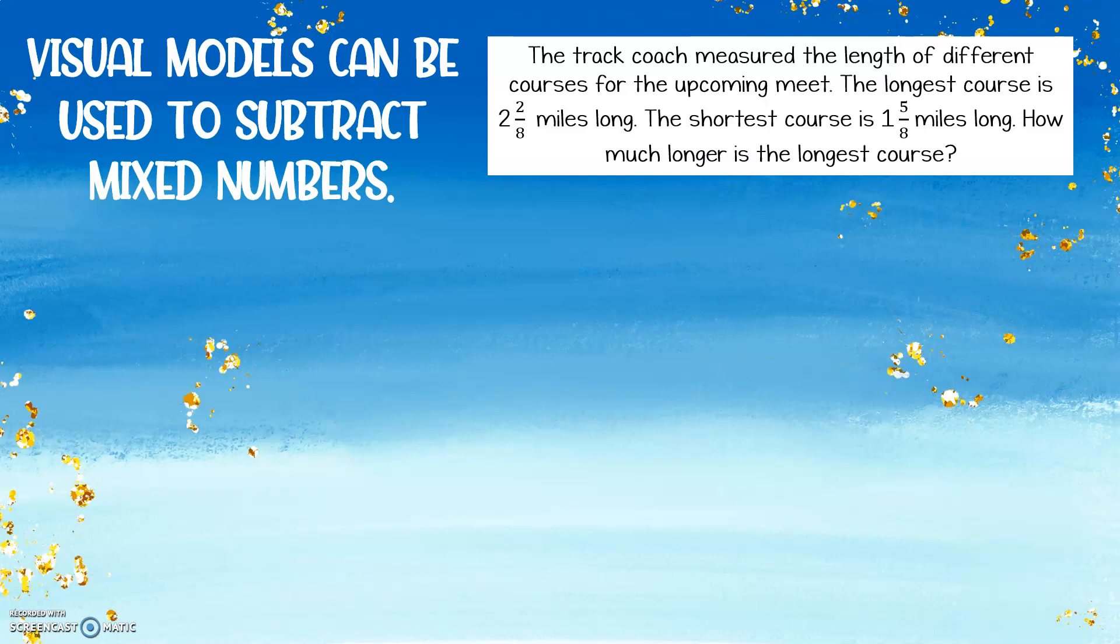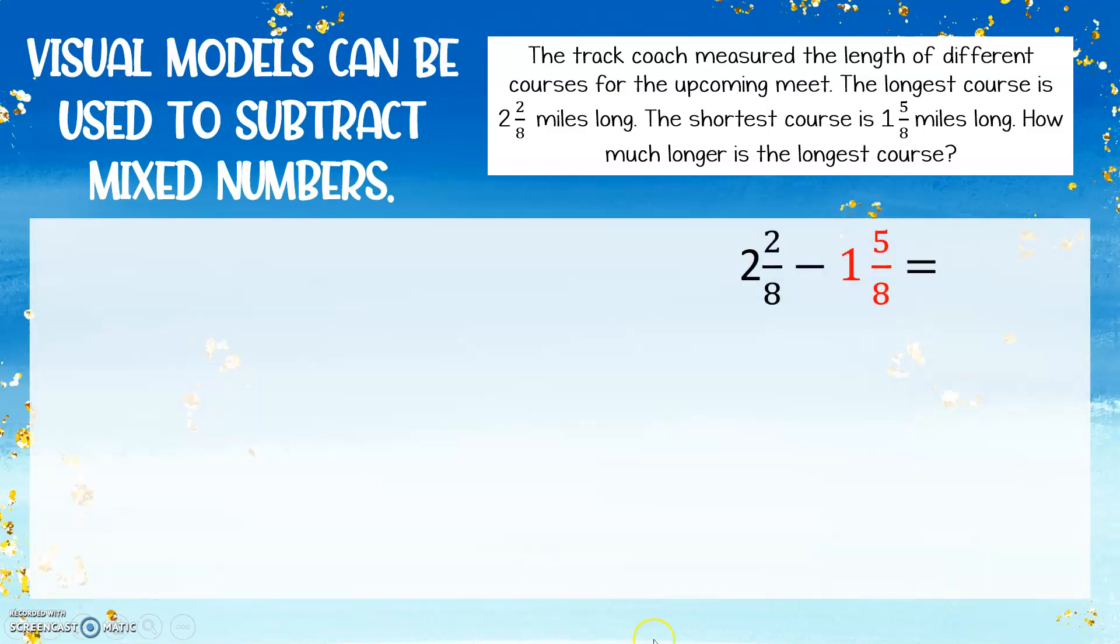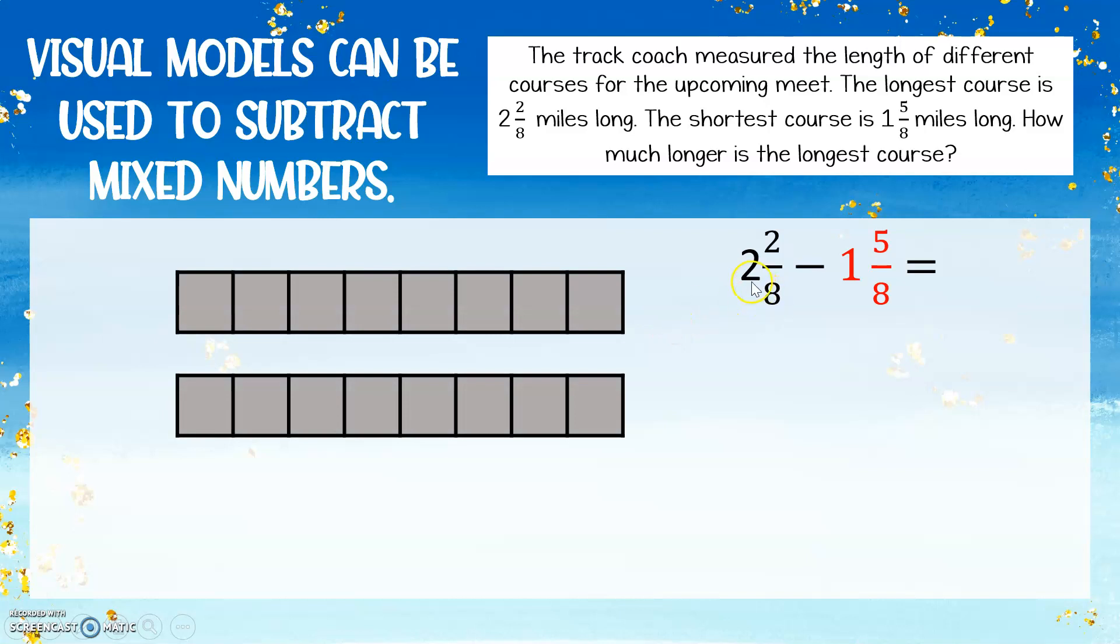So I need to find the difference between the longest course and the shortest course. The longest course is 2 and 2 eighths miles, and I need to take away 1 and 5 eighths from that. The first thing I'm going to do is represent my first mixed number in the subtraction equation. First I'm going to represent my 2 wholes. My 2 wholes will each be broken into 8 parts. All 8 parts will be shaded for both of those. Now I need to represent 2 eighths, so I'm going to shade 2 of my 8 equal pieces.